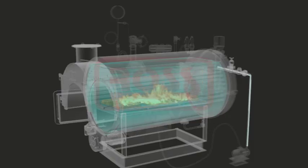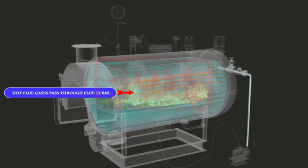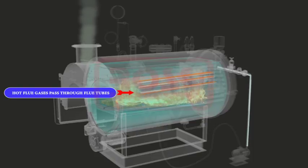The fuel bed is then ignited manually and the ID fan is started to provide necessary air draft for combustion. The furnace is heated up and hot flue gases pass through flue tubes for further heat transfer to water stored in the boiler.